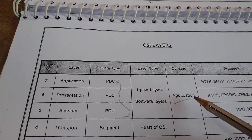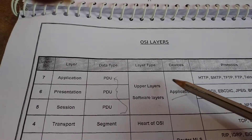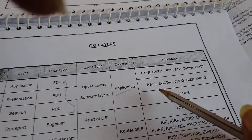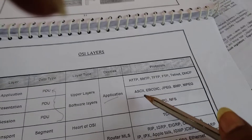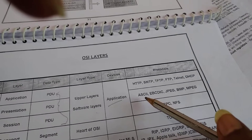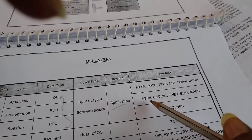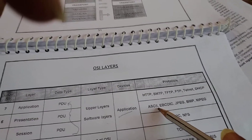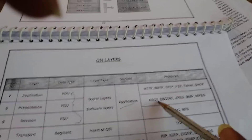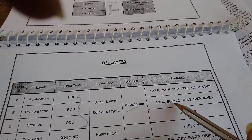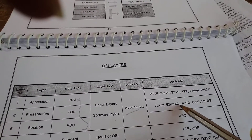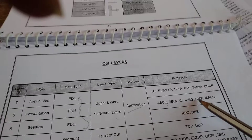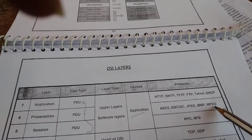Presentation layer: this is under the presentation layer, below the application layer. ASCII — American Standard Code for Information Interchange — along with EBCDIC, JPEG, BMP, and MPEG are examples of data formats handled at the presentation layer.